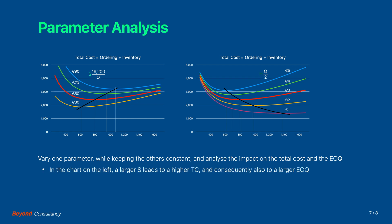In the chart on the left we notice that a larger ordering cost S leads to higher total cost and consequently also to a larger order size. The black line connects the lowest points of the successive curves. In the chart on the right, a larger inventory cost H also leads to higher total cost but it shifts the optimum towards a smaller order size. Also here the black line connects the minima.